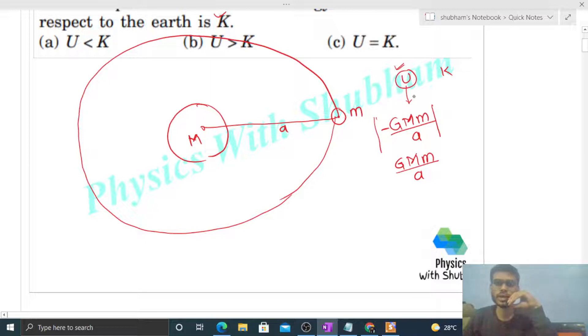Now we have to find out the kinetic energy of the Moon. What will be the speed of this Moon in this circular orbit? That will be simply under root GM/a.